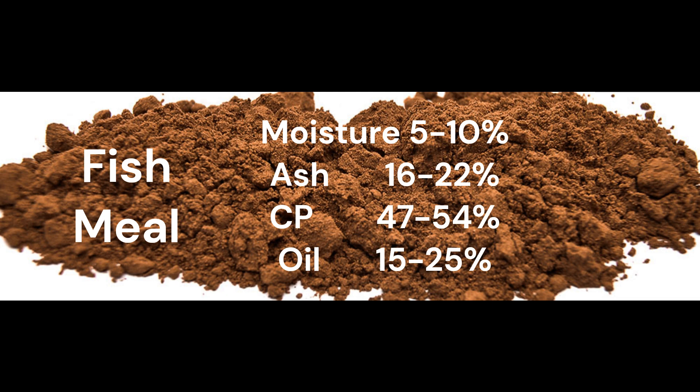Fishmeal contains 5-10% moisture, ash 16-22%, crude protein ranging from 47-54%, and oil 15-25%.